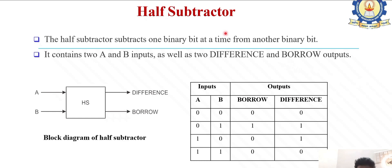Subtractor follows the same procedure. For two input combinations, we get difference and borrow. For A and B: 0 minus 0 gives difference 0 and borrow 0. 0 minus 1 is mathematically minus 1, but here it's difference 1 and borrow 1. 1 minus 0 gives difference 1 and borrow 0. 1 minus 1 gives difference 0 and borrow 0.